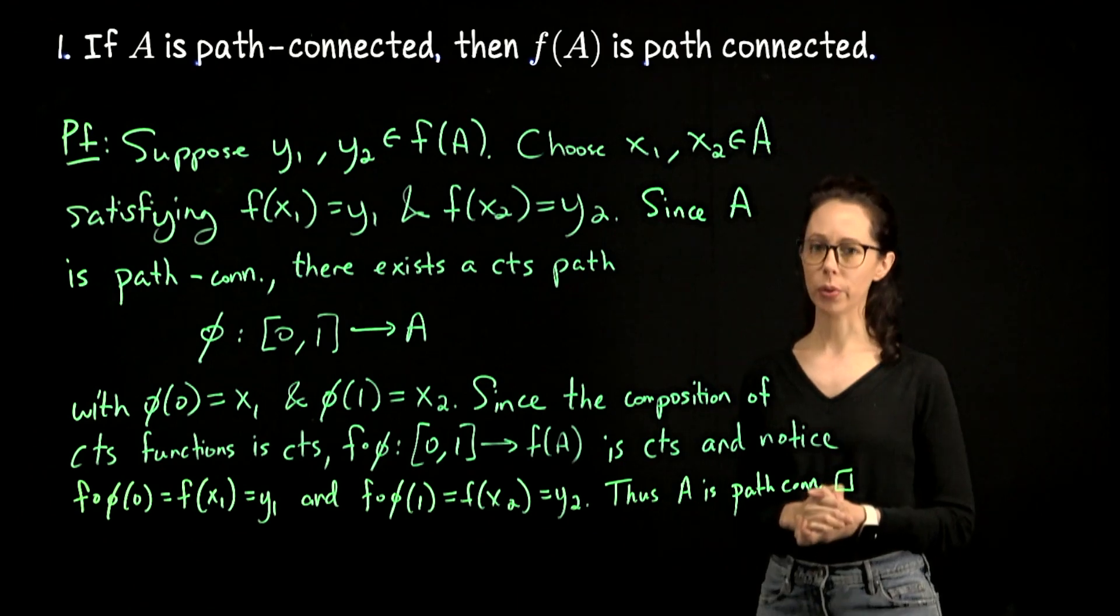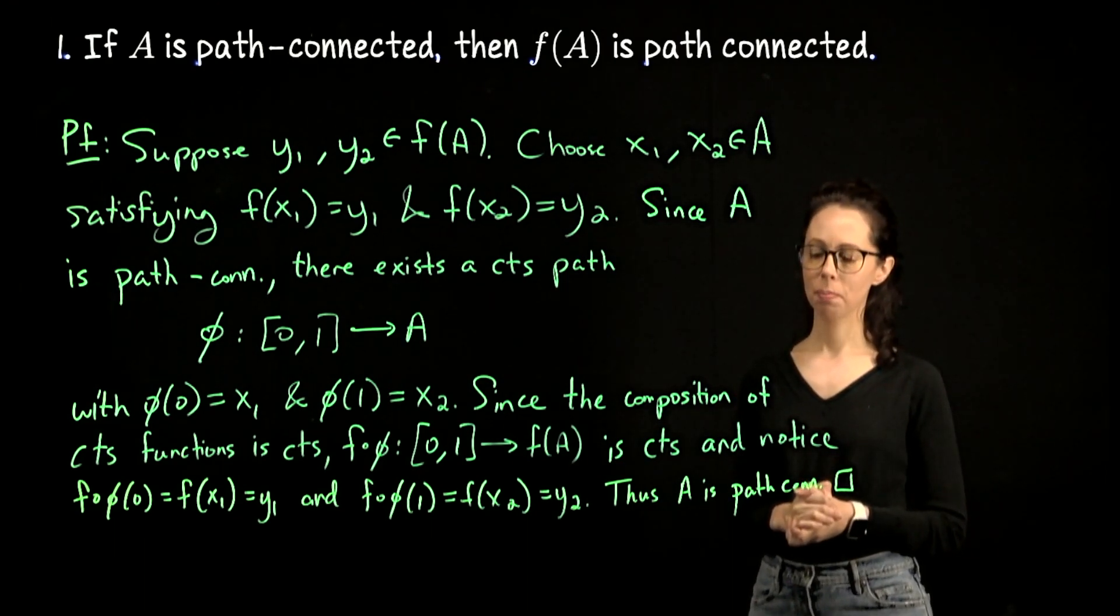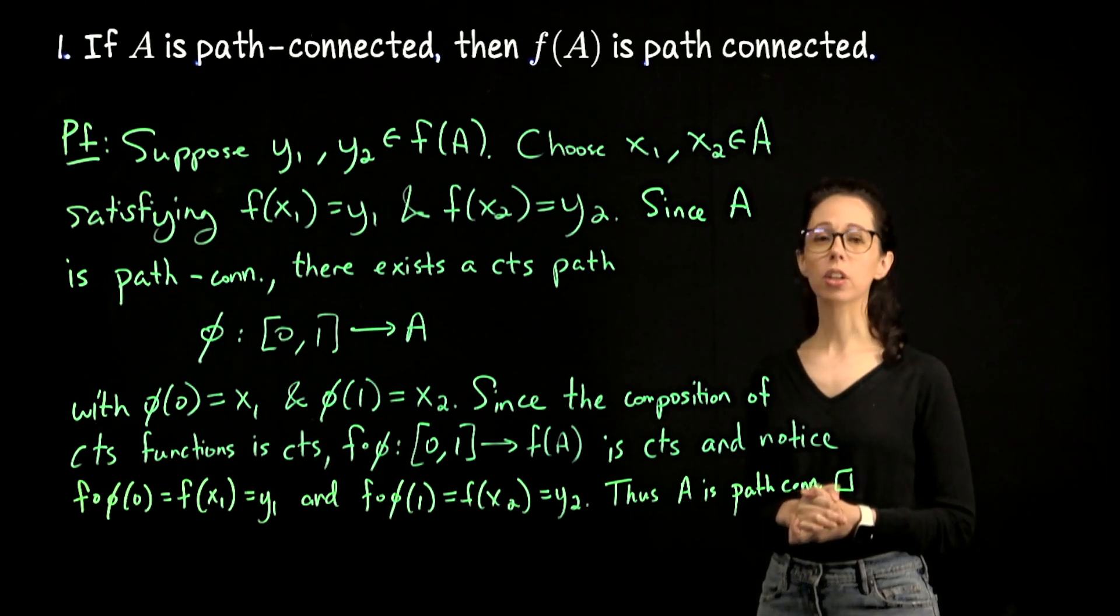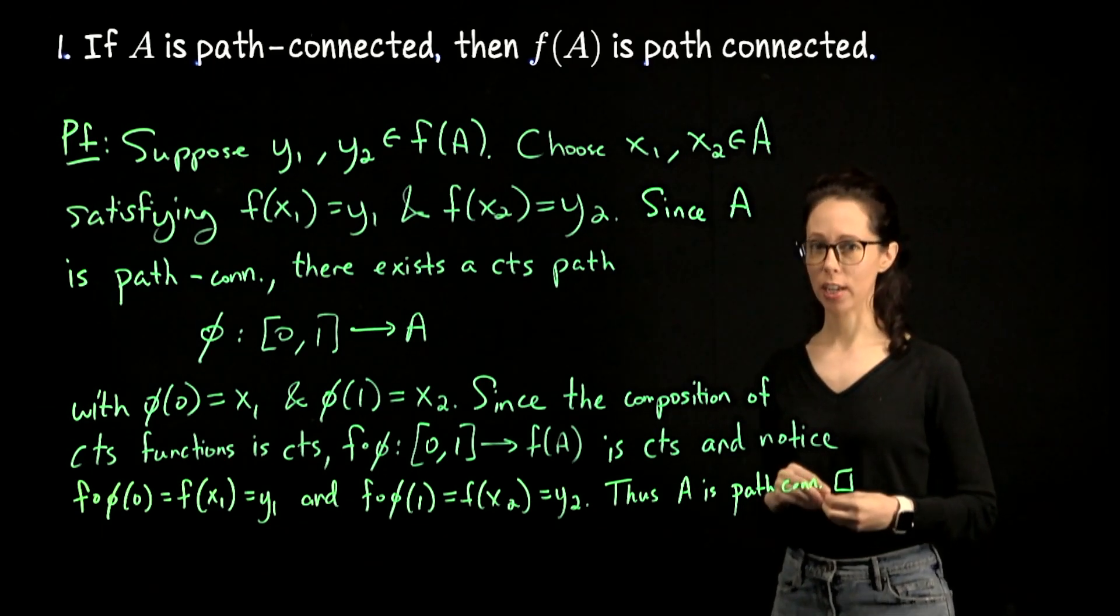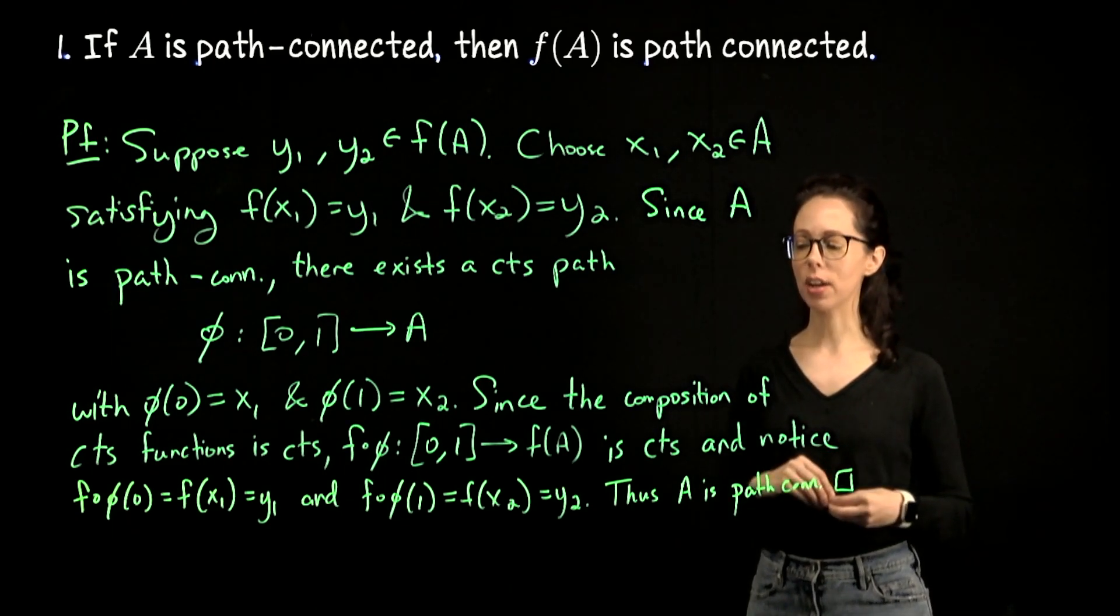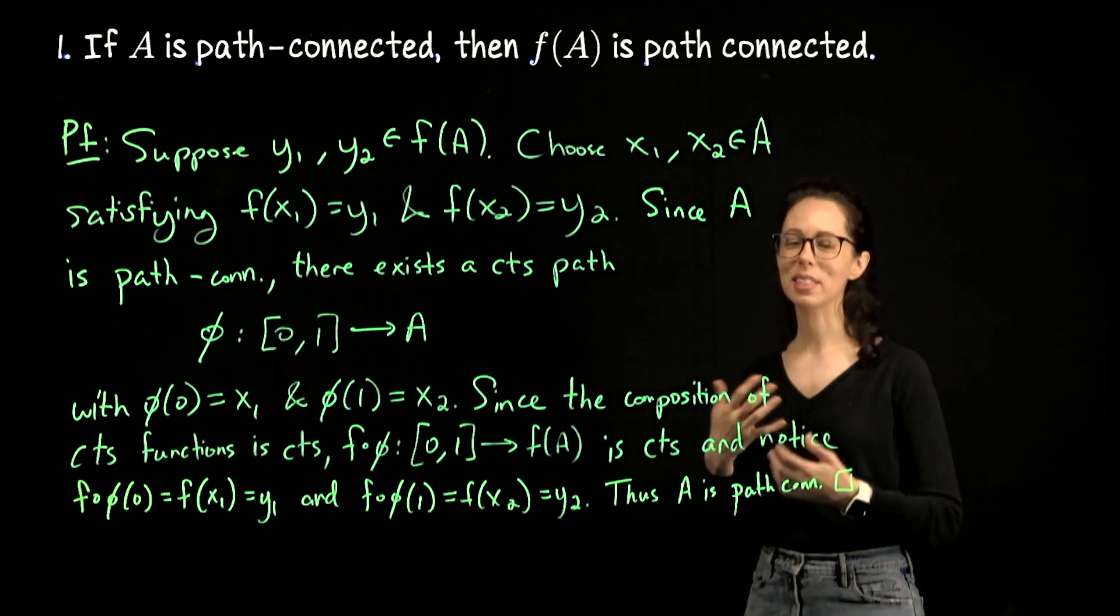Next, we will prove that a continuous function on a connected set has connected image. And that proof will actually look a little different. Try to anticipate why. So if you haven't had a chance to do so, look at the definition of a connected set and kind of see what's different about it.